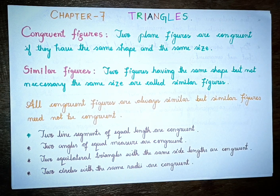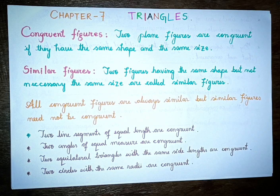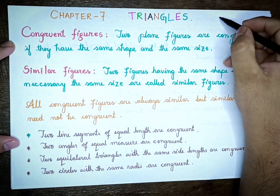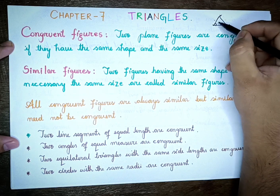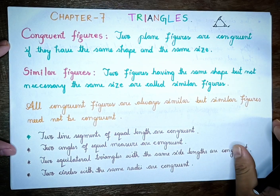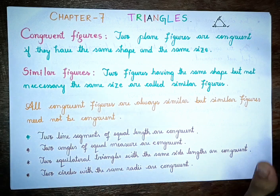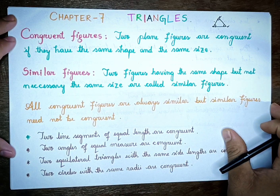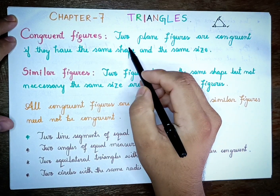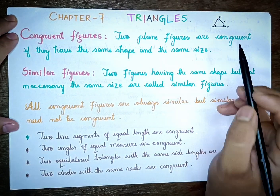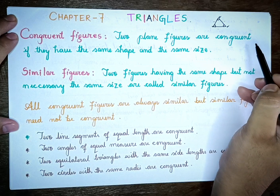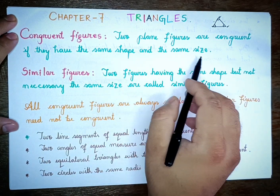In chapter number 7, Triangles. Triangles are bounded by three sides. The triangles are also known as congruent triangles if they have the same shape and same size.